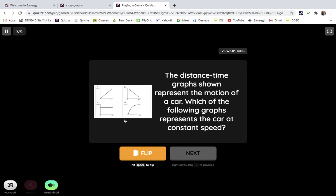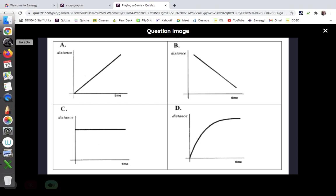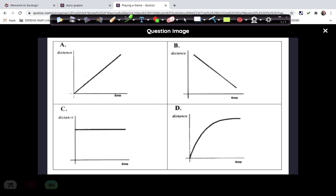Here is the next question. It says the distance time graph shown represents the motion of a car. Which of the following graphs represent a car at constant speed? And I'm going to actually pull out this to take a look at this. So I want to use my highlighter.